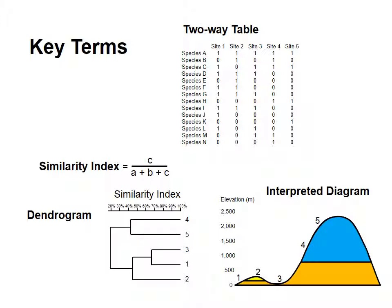The dendrogram is a diagram that lets us visualize the similarities of many places. Finally, we have an interpreted diagram. This is where we display our results, and it helps us identify patterns.